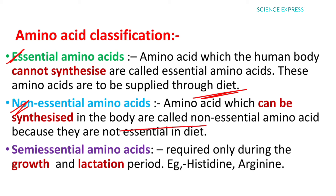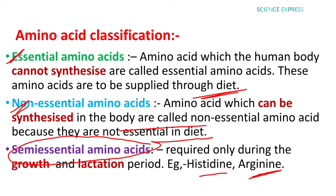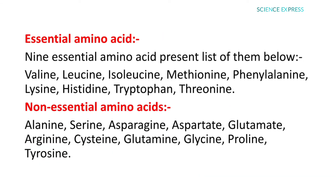Non-essential amino acids are those which can be synthesized in the body, so they are not essential in our diet. There is also a third type called semi-essential amino acids, which are required only during the growth and lactation period. Examples of semi-essential amino acids are histidine and arginine.